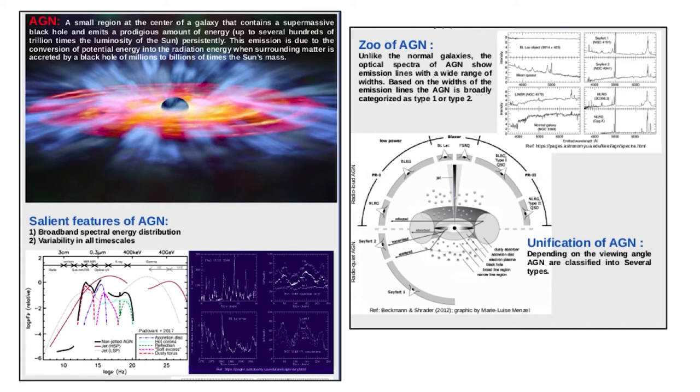Further classification is done based on the width of the broad emission lines: BL Lac, quasar, Seyfert, narrow-line Seyfert 1, Seyfert 1, and Seyfert 2.